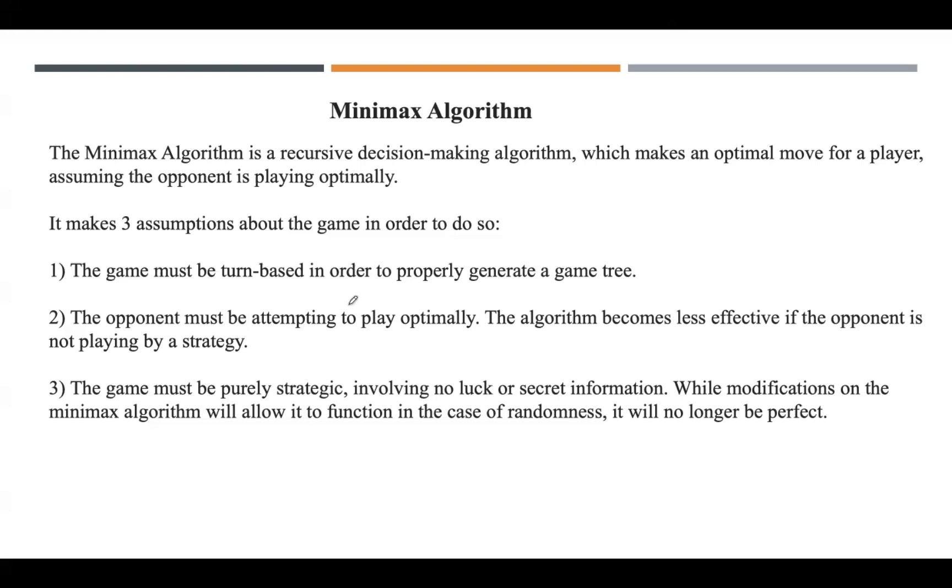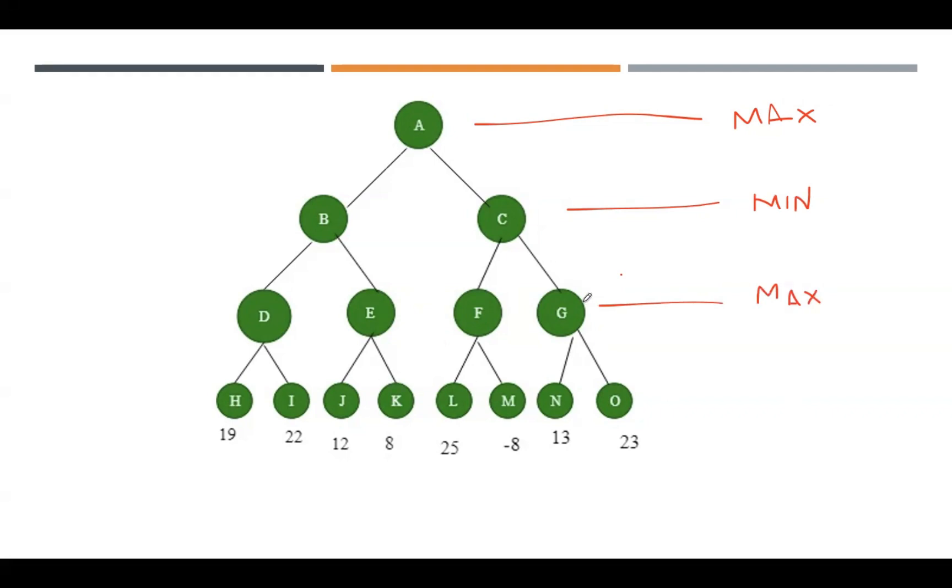These are a few assumptions about the game. The game must be turn-based in order to properly generate a game tree. The opponent must be attempting to play optimally. The algorithm becomes less effective if the opponent is not playing by a strategy. The game must be purely strategic, involving no luck or secret information.